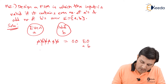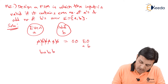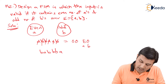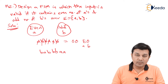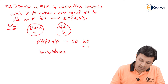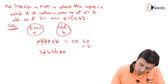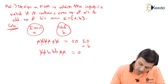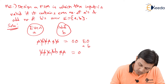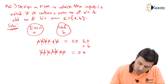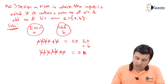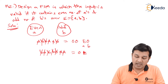Similarly, if I have an input like B, A, B, B, B, B, A, A — will this input be accepted? Counting the number of A's: 1, 2, 3 — so number of A's are odd. Counting the number of B's: 1, 2, 3, 4 — number of B's are 4, which is even. That is an odd-even combination, and I am not interested in that.